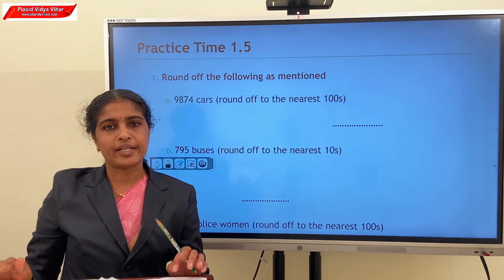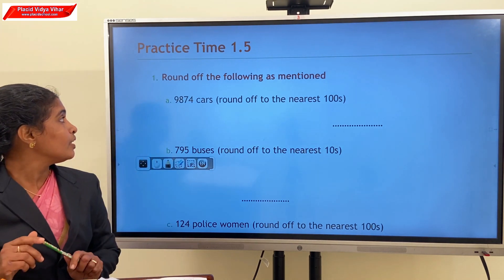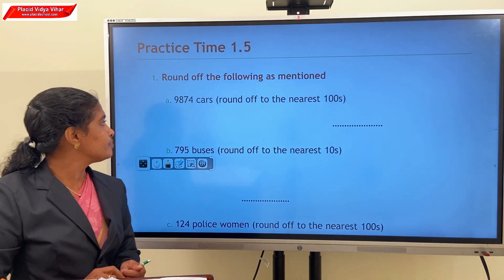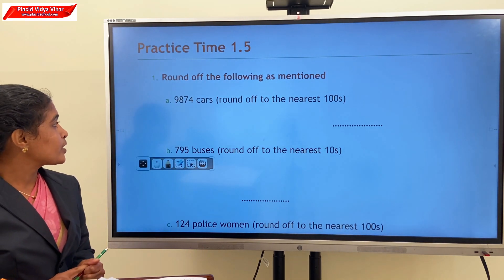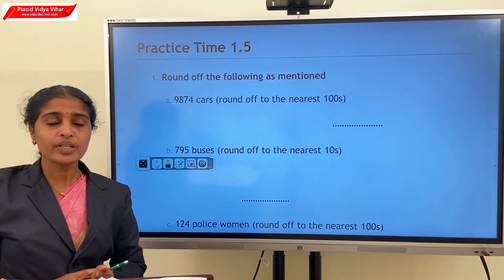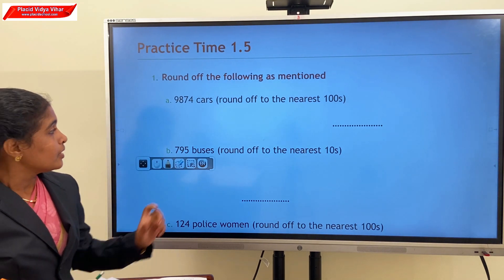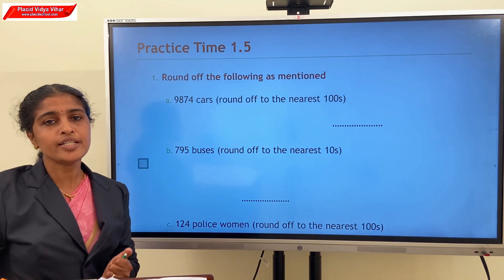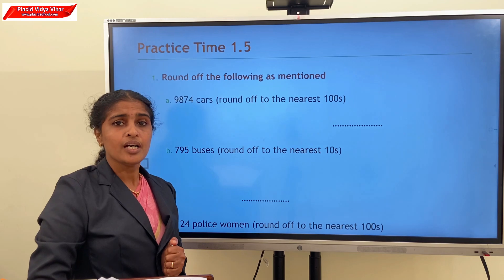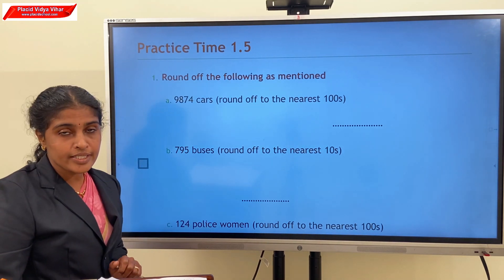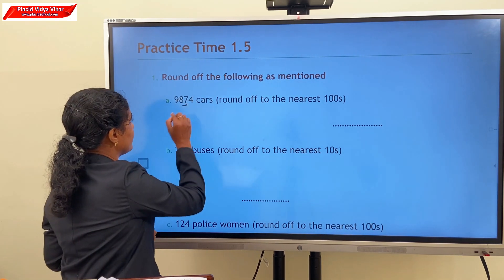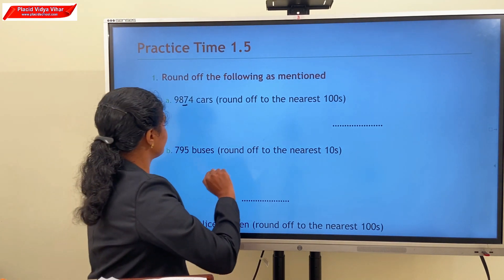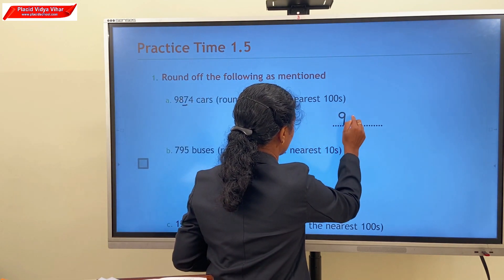Now let us go to practice time. First question: round off the following as mentioned. For 9,874 — round off to the nearest hundreds. We consider the tens digit, which is 7. Since 7 is more than 5, our answer is 9,900.